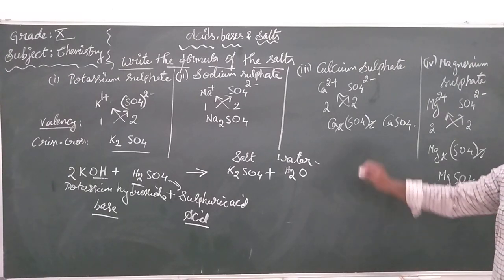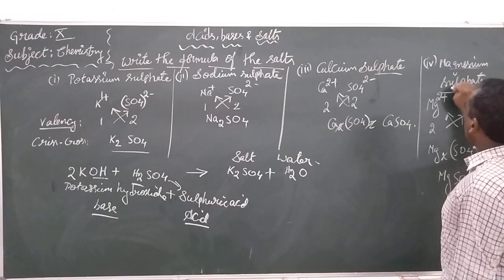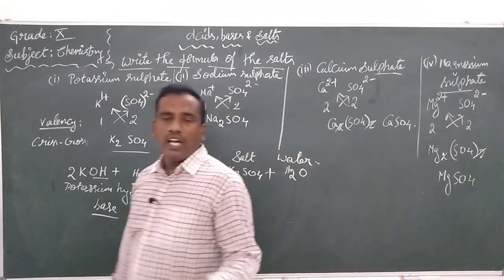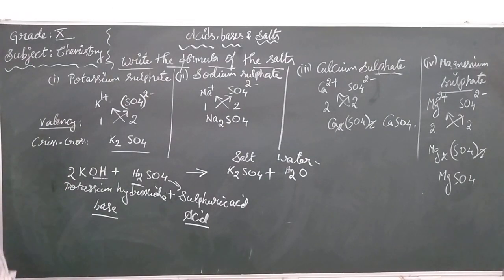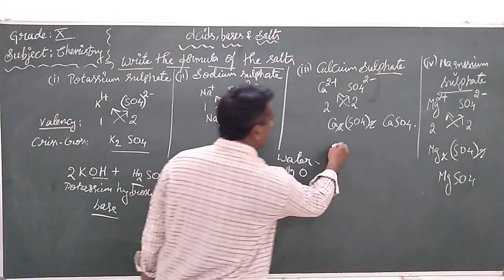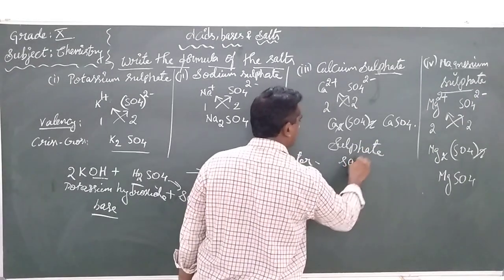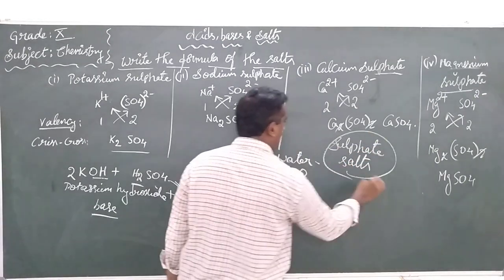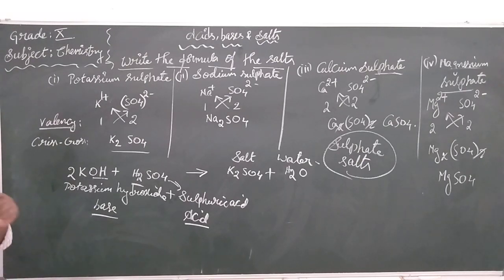Now your task is to observe what is common in all these: sulfate, sulfate, sulfate, sulfate. The salts that have a common ion are called by that name — these are all called sulfate salts. You can work with the remaining activity in the NCERT textbook to learn more — try it and then ask me the questions.